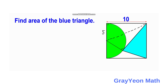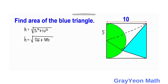Next, we find the hypotenuse h. h is equal to the square root of 5 squared plus 10 squared, which gives us the square root of 25 plus 100, so h equals the square root of 125. Since 125 can be written as 5 cubed, we extract the perfect square: h equals 5 square root of 5.